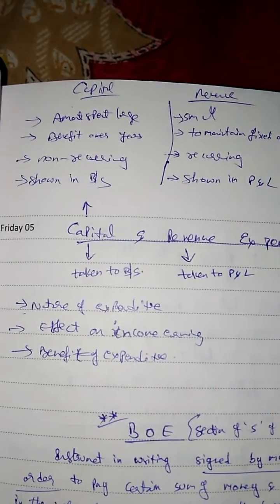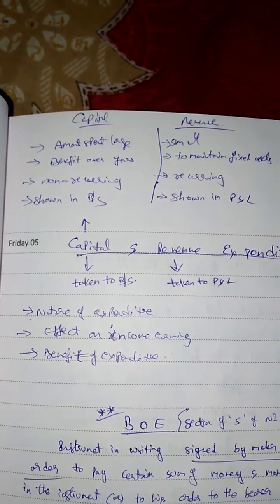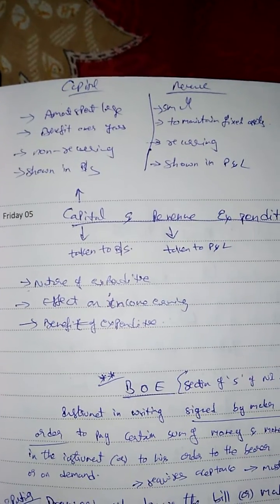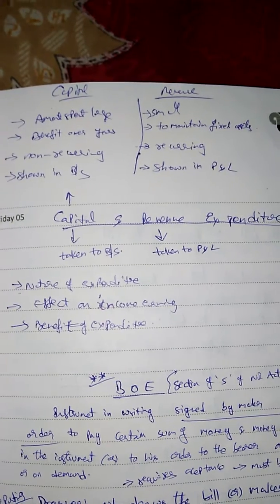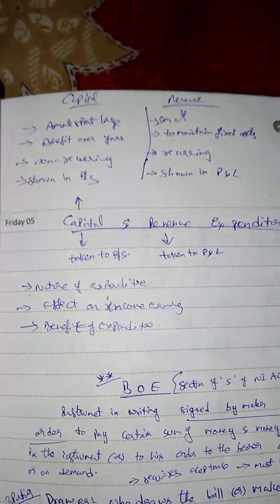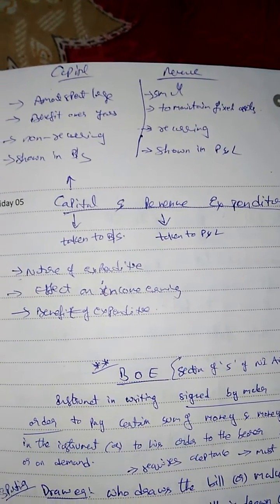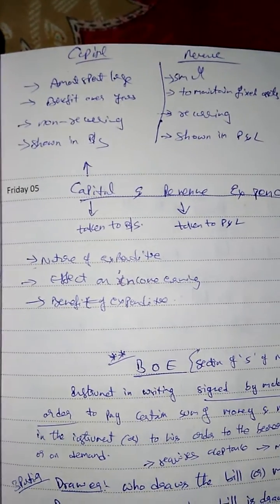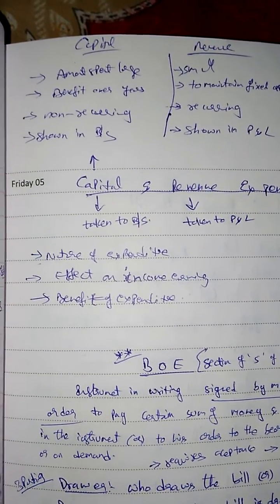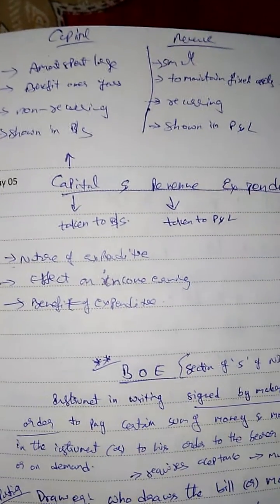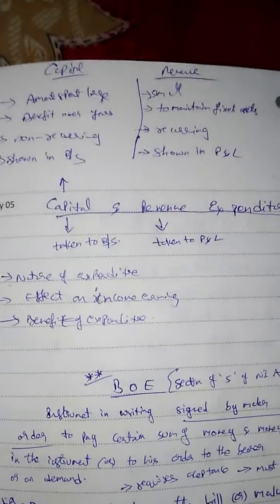In summary: in capital expenditure the amount spent is large, while in revenue expenditure the amount is small. The benefit derived from capital expenditure is over the years, whereas revenue expenditure benefits only a shorter term. Amount spent in creation of an asset is capital expenditure; amount spent in maintenance of that asset is revenue expenditure. Revenue expenditures are recurring in nature, while capital expenditures are non-recurring. Capital expenditure is shown in the balance sheet, whereas revenue expenditure is shown in the P&L account.